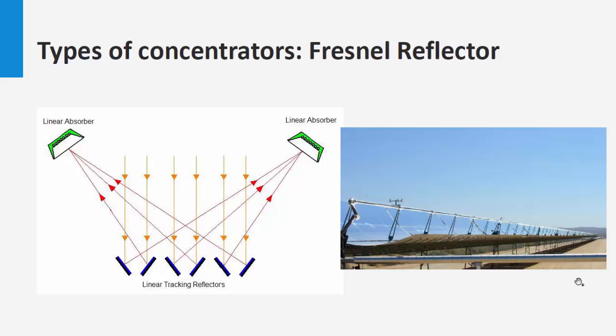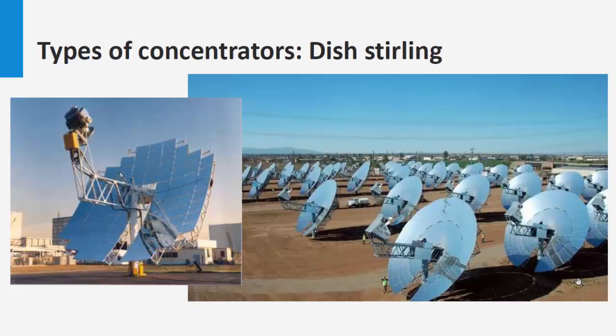Another important concentrated system is the dish Stirling. A dish Stirling or dish engine system consists of a parabolic reflector that concentrates light to the reflector's focal point, where the working fluid absorbs the energy, heating up to 500 degrees Celsius, and is able to operate a heat engine. This system provides an efficiency of 31%, which is rather high.